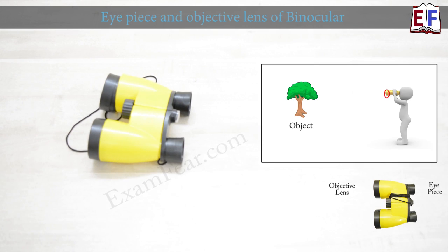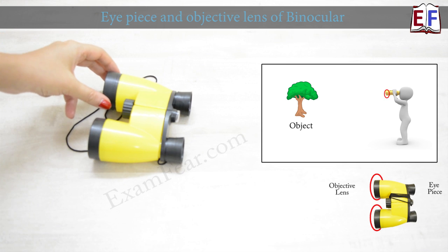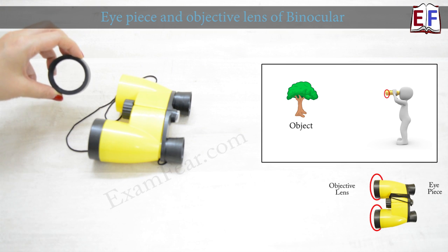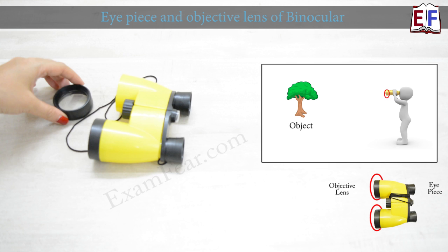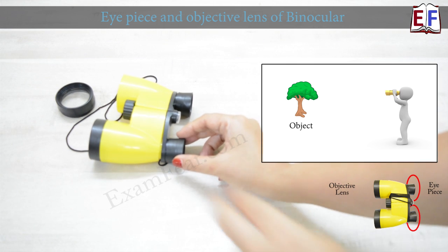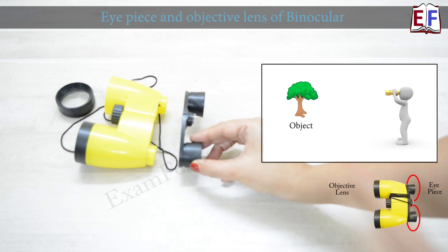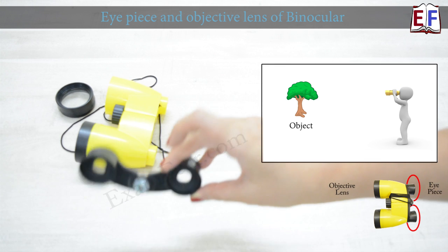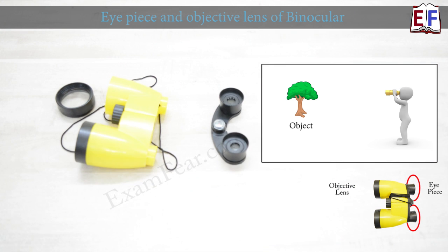A binocular has a set of objective lens — the lens which remains closer to the object. So this is the objective lens. And it has a set of eyepiece. So this is the eyepiece.